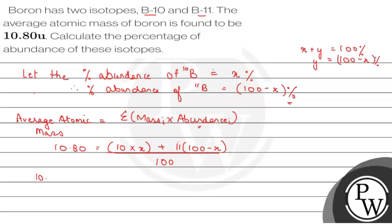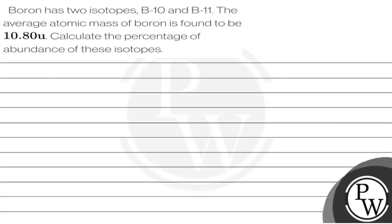This will be 10x plus 1100 minus 11x. This will be 1080 equals negative x plus 1100 because 10x minus 11x.